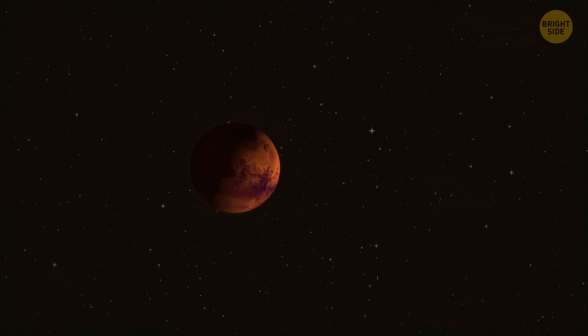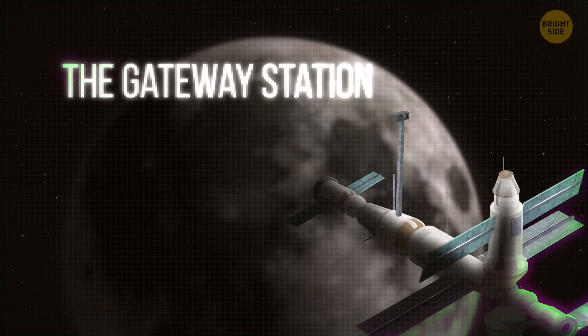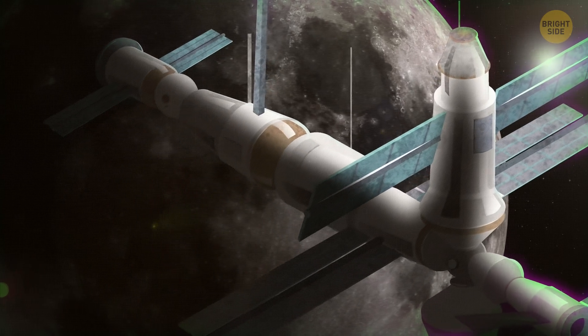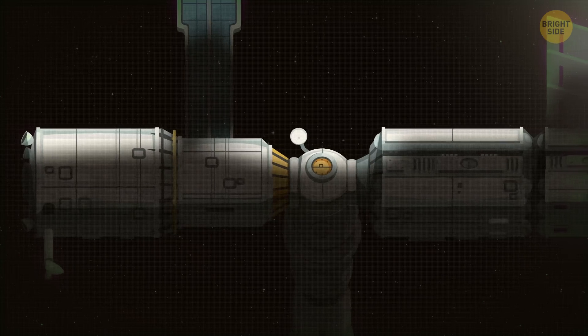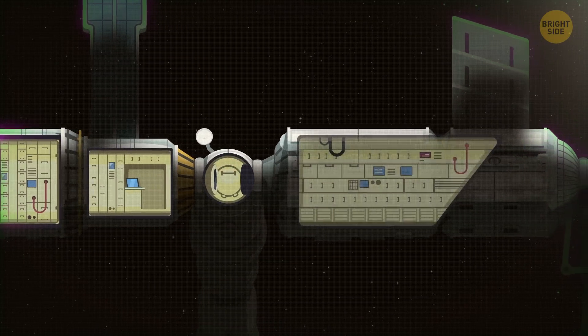There's a cheaper way to get to Mars, though. The Gateway Station on the Moon. It's kind of like the ISS, only it orbits our natural satellite. It'll also have many modules for astronauts. Living bays, storage bays, docks for ships, and research units.